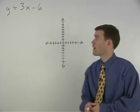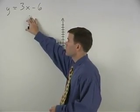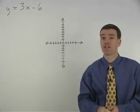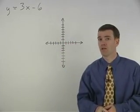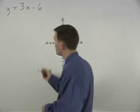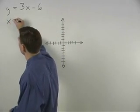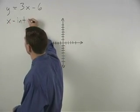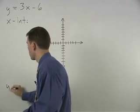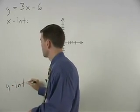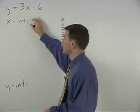If we're asked to graph the line y equals 3x minus 6 using the intercept method, we start by finding the x-intercept and y-intercept for our given line.